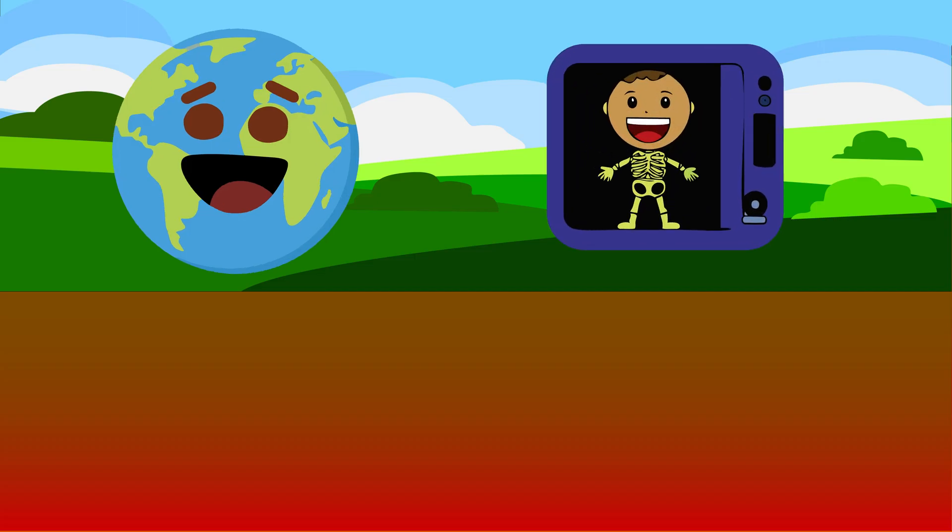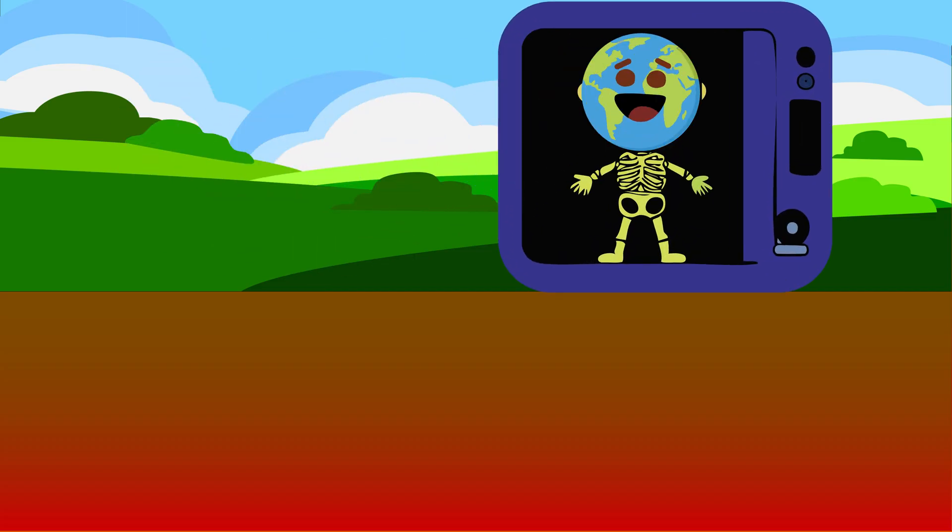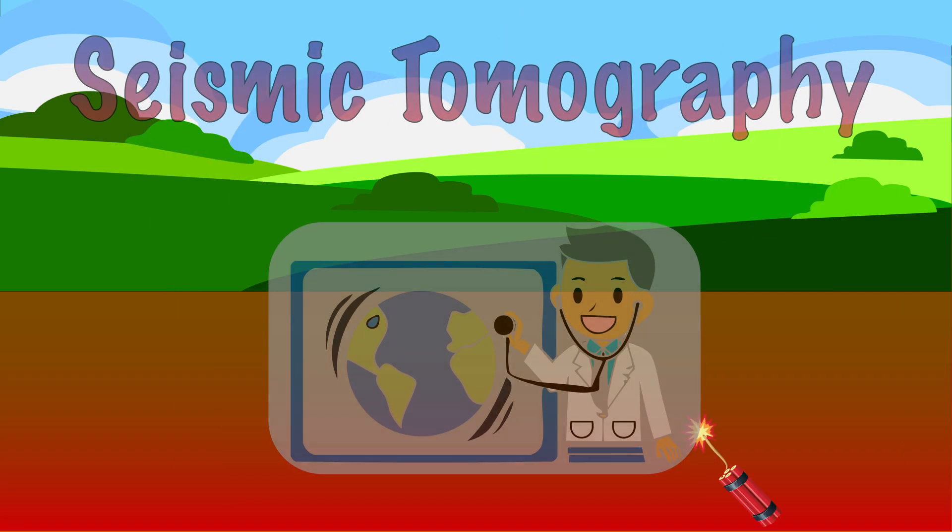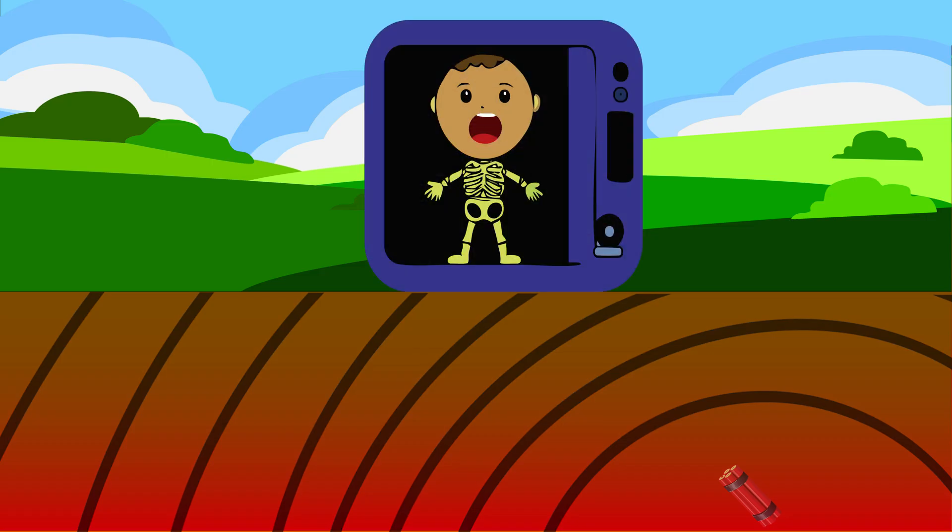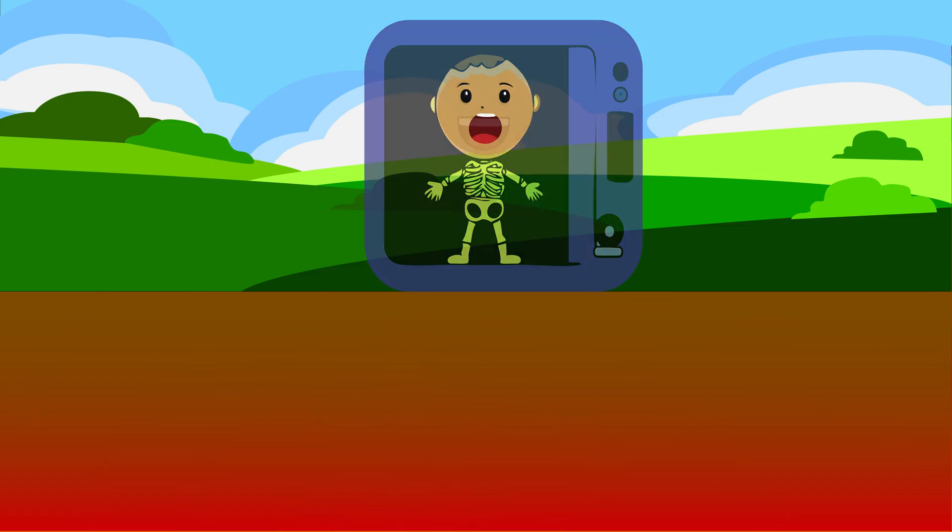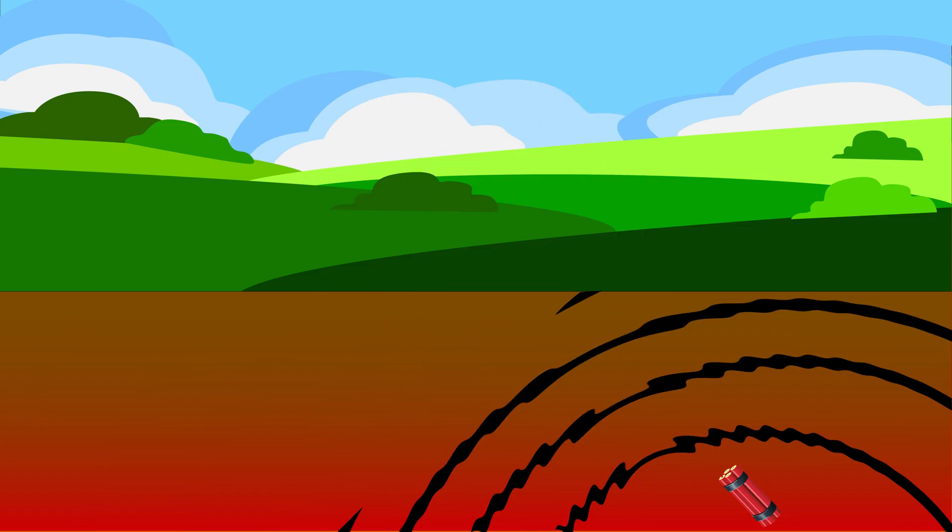Now imagine giving the Earth an x-ray, just like a doctor does to look inside our bodies. That's what scientists do with a method called seismic tomography. The word seismic means earthquakes, and tomography means creating a picture of the inside of something. So seismic tomography uses earthquake vibrations to see what's underground.